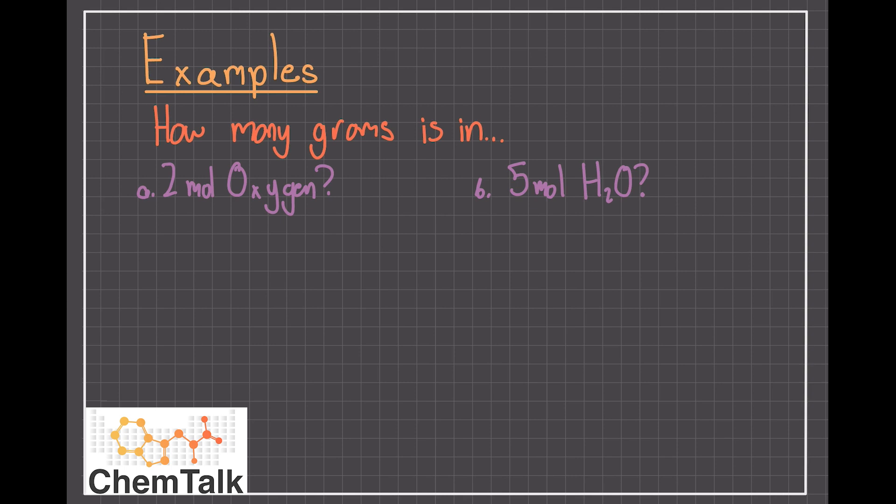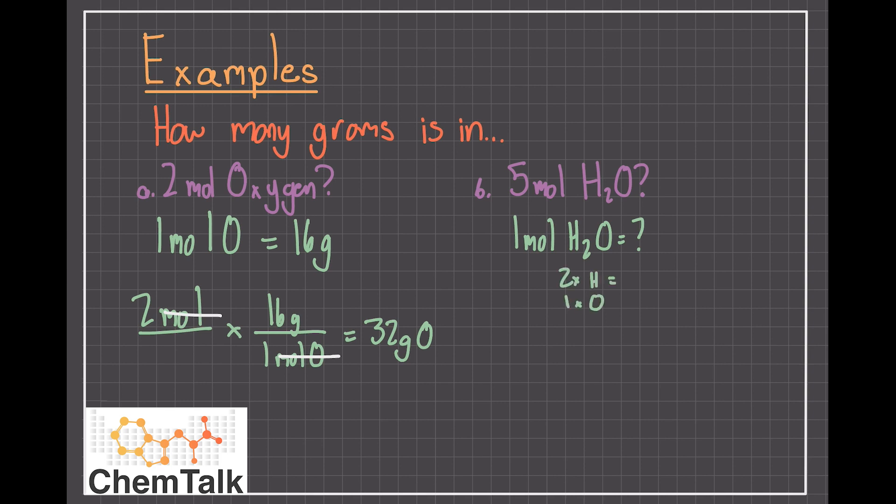This is a common question that we'll come across when dealing with molar mass. How many grams are in this amount of moles? In the first example, we're given two moles of oxygen. From the periodic table, we know that one mole of oxygen is equal to about 16 grams of oxygen atoms. We correctly line up the units for our conversions, multiply across and divide, and we find that two moles of oxygen is about equal to 32 grams of oxygen atoms.